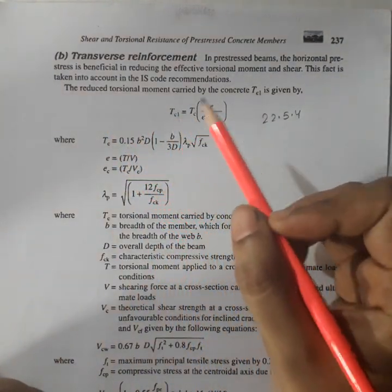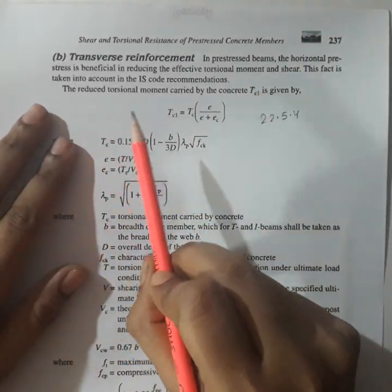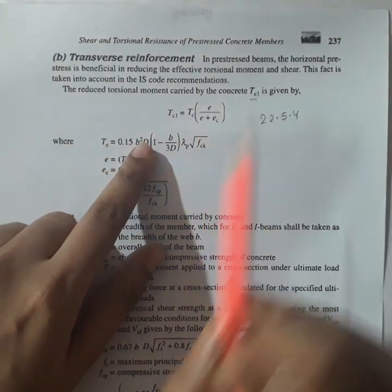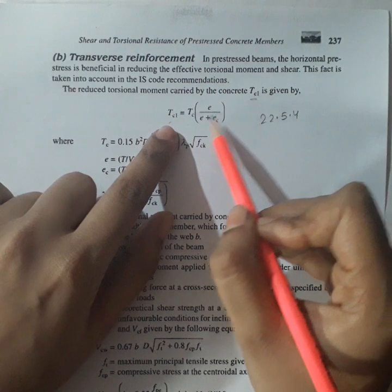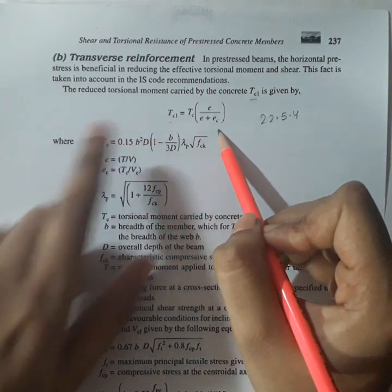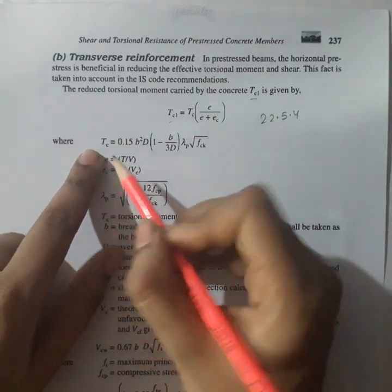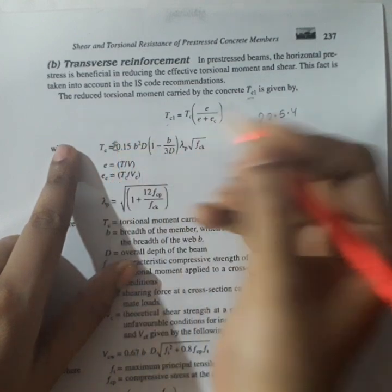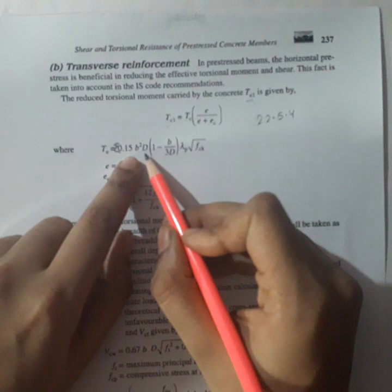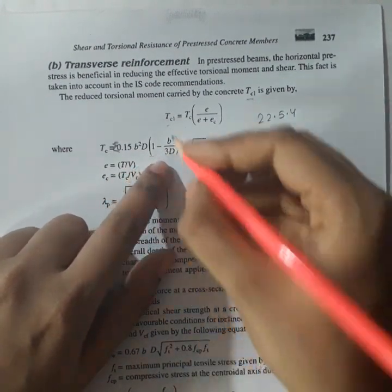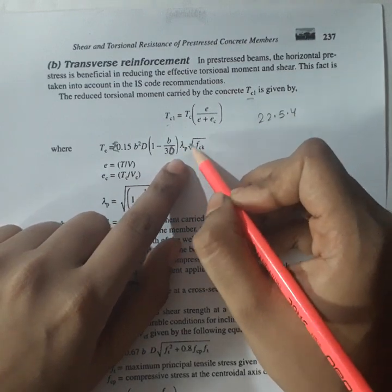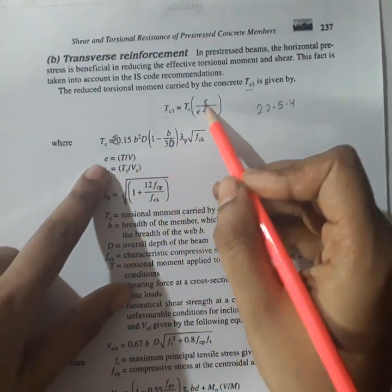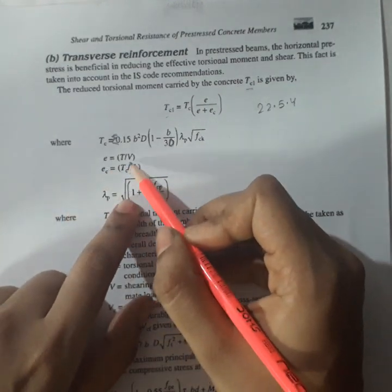Here the torsional moment and the shear carried by the concrete. The reduced torsional moment carried by the concrete is represented as TC1. TC1 is represented as equal to TC into small e divided by small e plus e subscript c. Where this TC is summation of 0.15 B squared capital D within bracket 1 minus B by 30, B by 30 into lambda P root over fck.